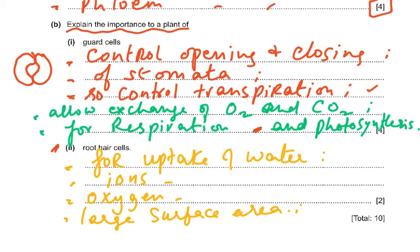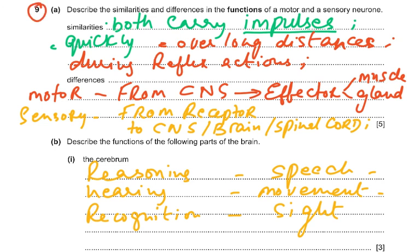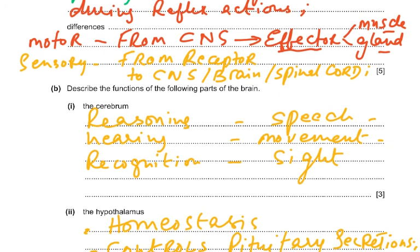Question 9A: describe the similarities and differences in the functions of motor and sensory neurons. Similarities: both carry impulses very quickly (about 100 metres per second) over long distances and both are active during a reflex action. Differences: motor neurons carry impulses from the central nervous system to the effector (muscle or gland); sensory neurons carry impulses from the receptor to the central nervous system.